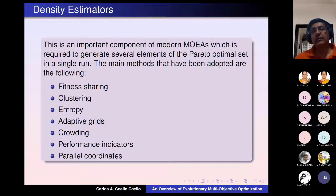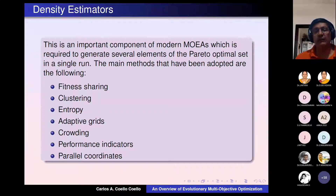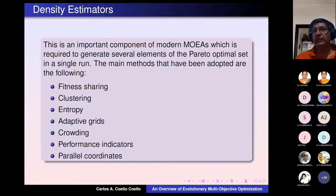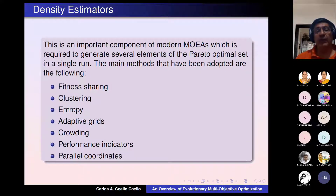Density estimators are used to maintain diversity in the population—generating solutions that are different so that several elements of the Pareto optimal set can be produced in a single run. Options include fitness sharing, clustering, entropy, adapted grids, crowding, performance indicators such as hypervolume, and parallel coordinates. Some, like adapted grids and crowding, were originally proposed only for two objectives and are not scalable. Others, like performance indicators, parallel coordinates, fitness sharing, and clustering, are scalable and can be used with any number of objectives.